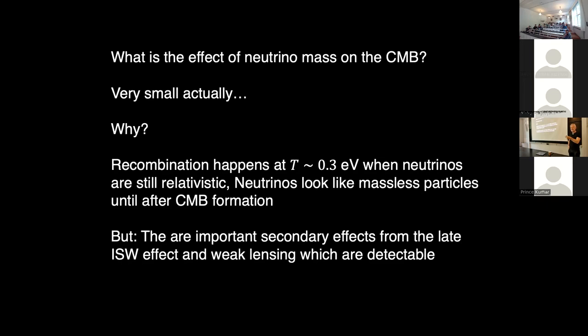You do get small effects, such as the early integrated Sachs-Wolfe effect — the fact that the energy content is slightly different with massive neutrinos — leading to slight effects around the first acoustic peak. But more importantly, what we see in the CMB is photons that have propagated through the universe to us, meaning their paths are subject to gravitational lensing. That effect is really large if you have neutrinos, because the matter power spectrum is changed radically by neutrinos, and so is gravitational lensing. That gives quite significant sensitivity — but it's not the primary CMB; it's the secondary effect on the CMB.